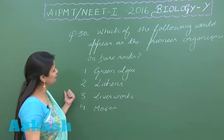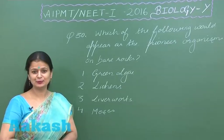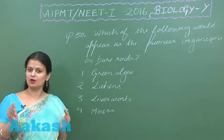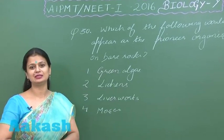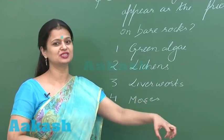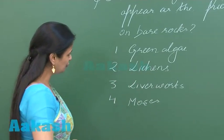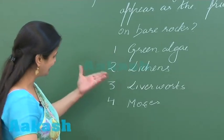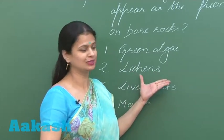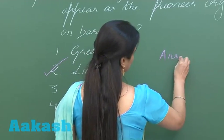Question number 30 — which of the following would appear as the pioneer organism, meaning the first community? If we talk about bare rock, the first community is formed by lichens. In a newly formed pond, the first community is formed by phytoplanktons. Looking at the options, lichen is present, meaning it is the pioneer community over the rock surface. The right option for question 30 is option number 2.